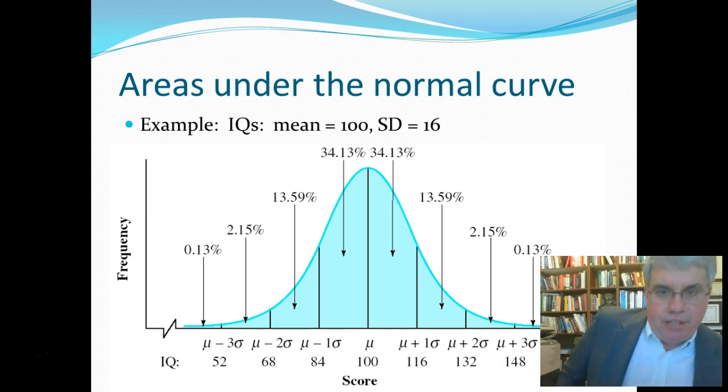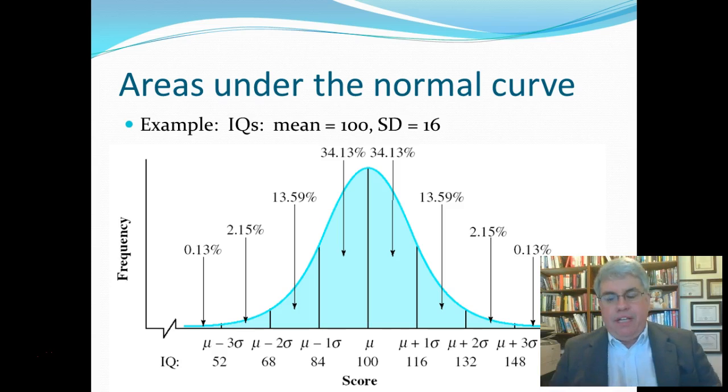Now, one of the interesting things about the normal curve is that the areas are always constant for a given standard deviation away from another point. Let's take an example of IQs. IQ is a measure of cognitive ability, and most people are somewhat familiar with it. But there's several ways of defining IQ.